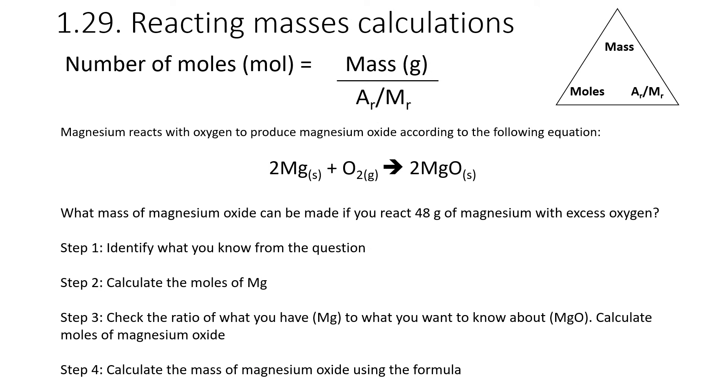Now here's where you get into the complicated, often seen as challenging, reacting masses calculations. I'm going to talk you through the steps, but don't be disheartened. We're going to practice each step individually. Hopefully you'll get to the point where you can bank these marks in the exam because they're actually really quite easy once you get the hang of them. A question might say, magnesium reacts with oxygen to produce magnesium oxide according to the following equation. What mass of magnesium oxide can be made if you react 48 grams of magnesium with excess oxygen? Excess means you have more than enough to react all of the 48 grams of magnesium.